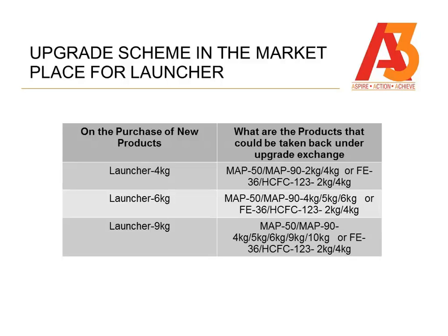For Map 50, Map 90 4kg, 5kg, 6kg, 9kg, 10kg, or Fe36, or HCFC 123 2kg or 4kg — against launcher 9kg. You have a good basket of products that you can offer a launcher against. This is all unit to unit replacement.